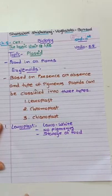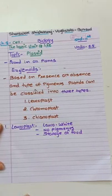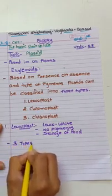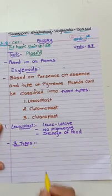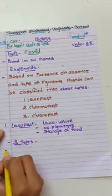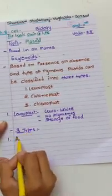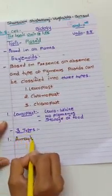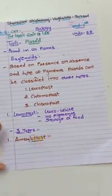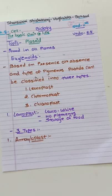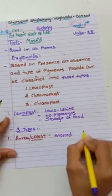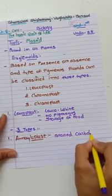On the basis of storage of food, leukoplasts are classified into three types depending upon what is stored in them. The first type is amyloplast, which stores carbohydrates.